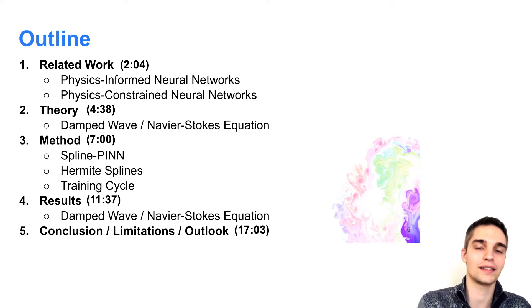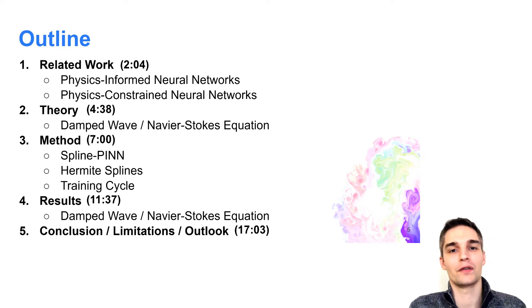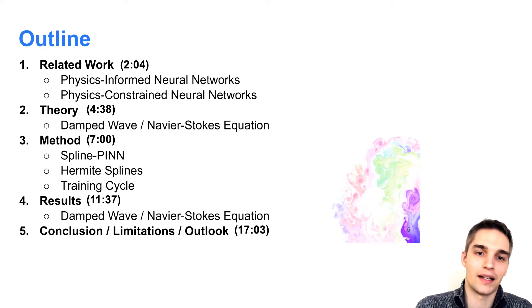In this work, we propose to combine both methods using Hermite-spline CNNs in order to leverage the advantages of both approaches. We show that our method successfully learns fast continuous simulations of partial differential equations at the example of the damped wave equation and the incompressible Navier-Stokes equation. In the following, I'll first give a short overview of our related work. Then I'll go briefly over some basic theory in order to explain our method. Afterwards, I'll present our results and at the end I'll draw our conclusions for this work.